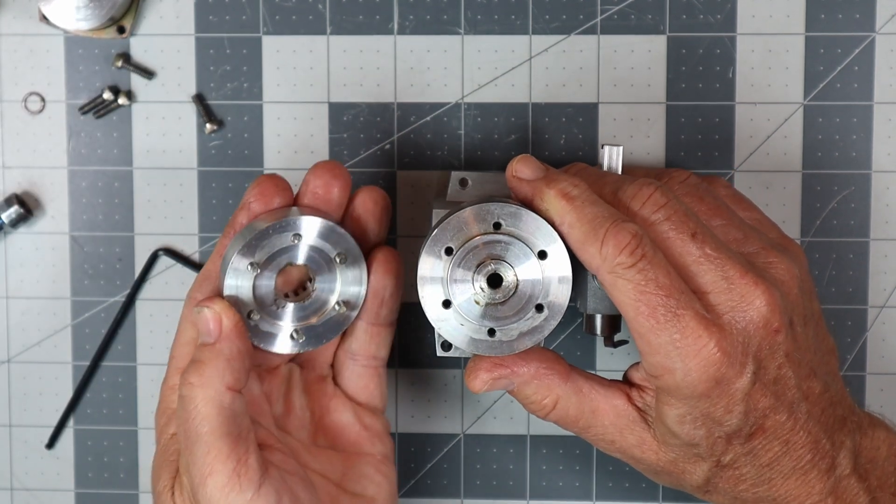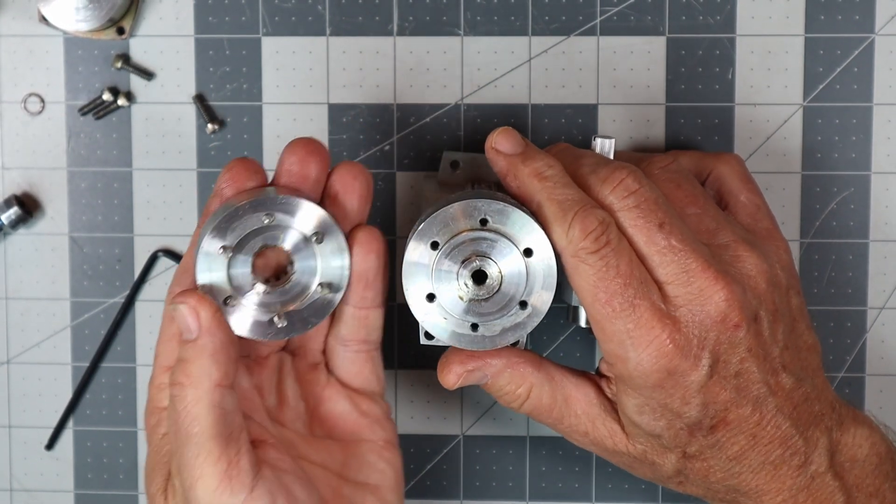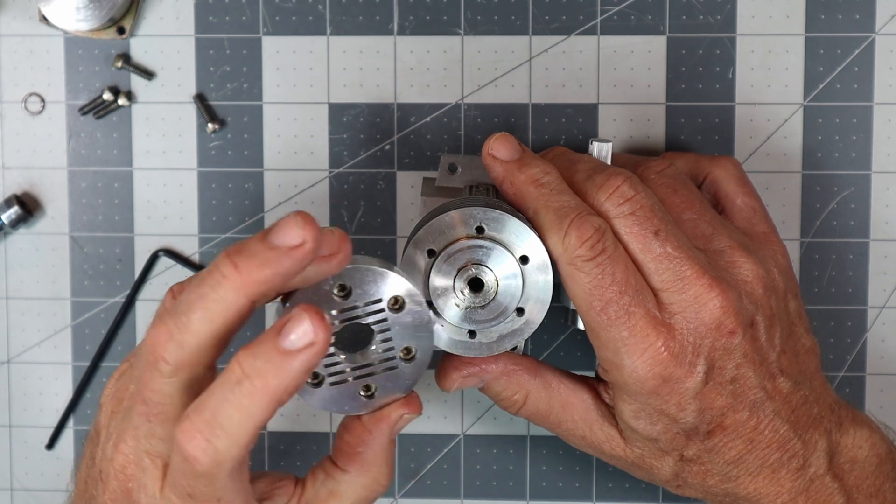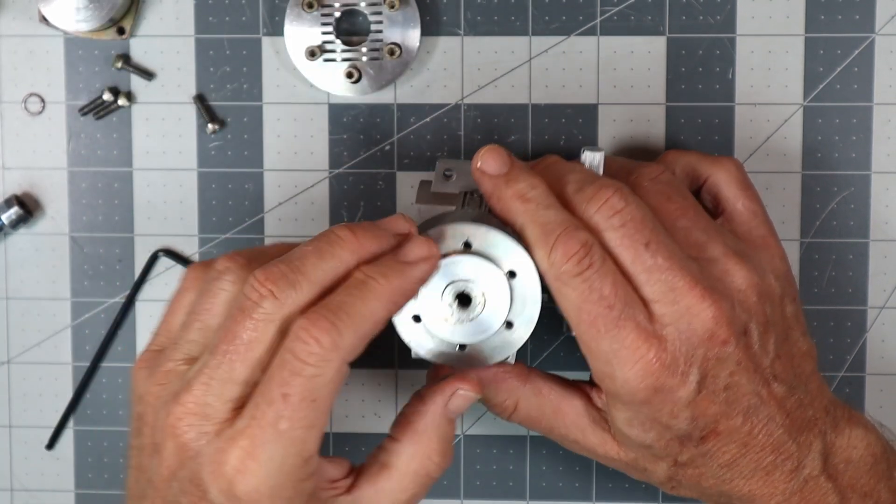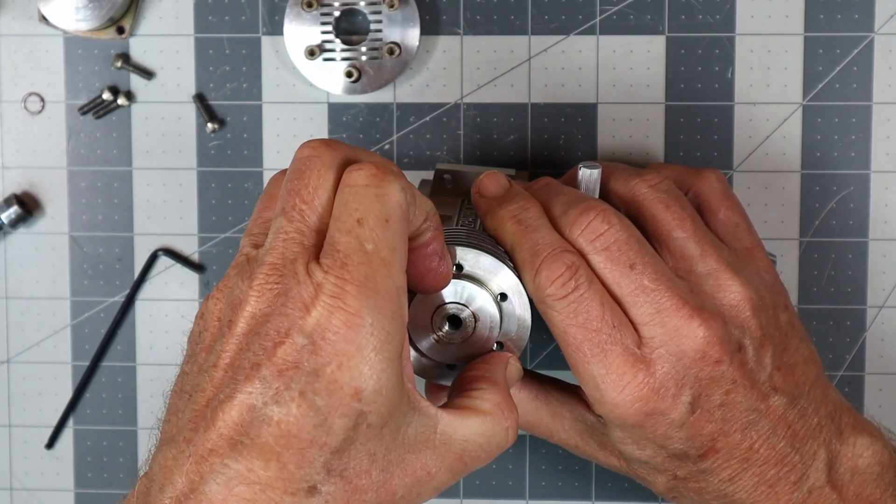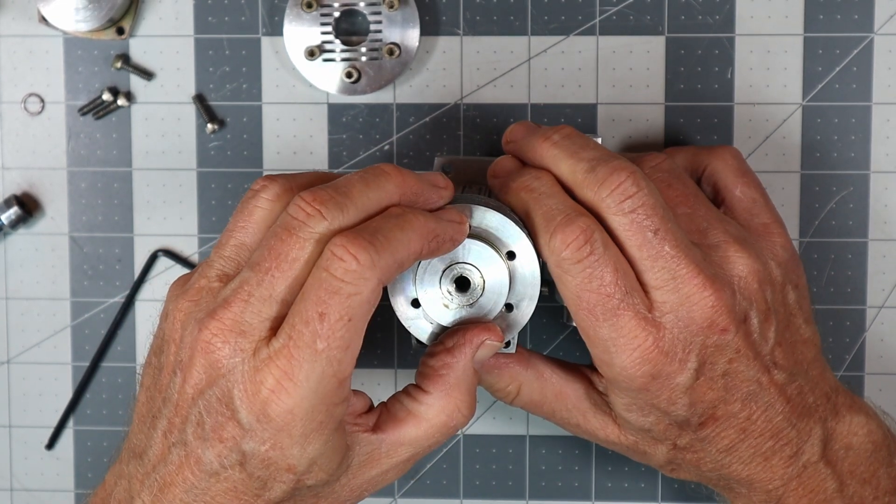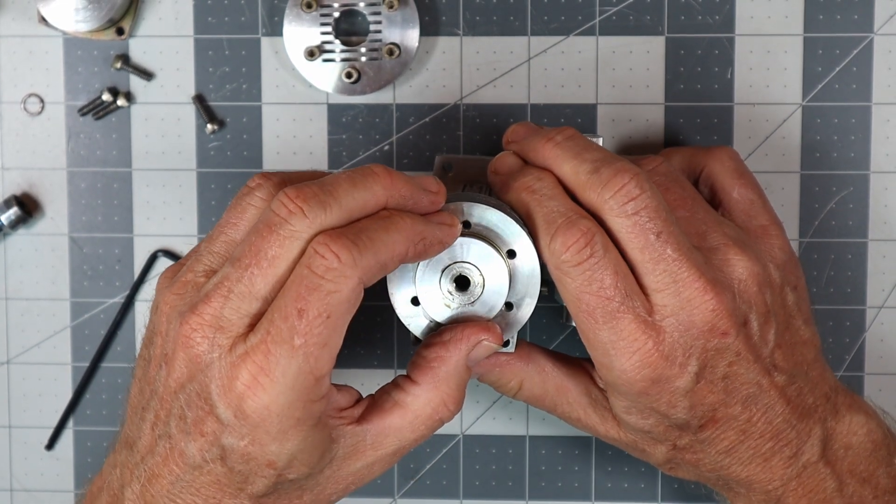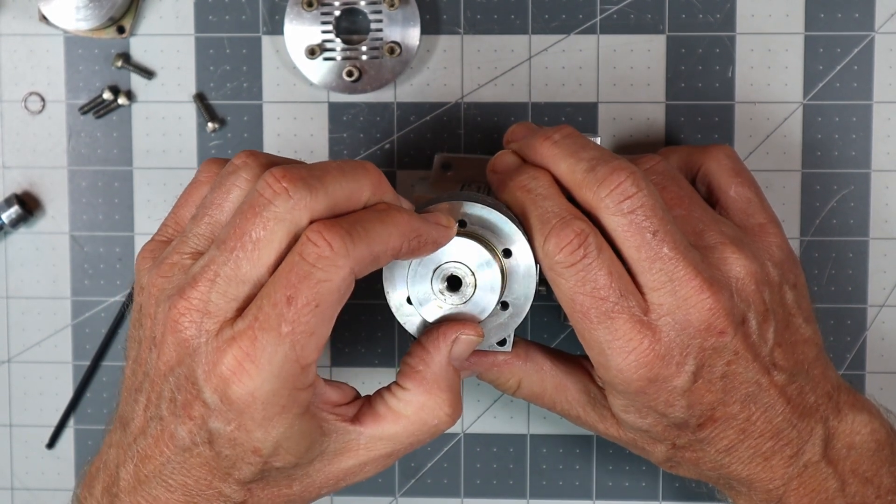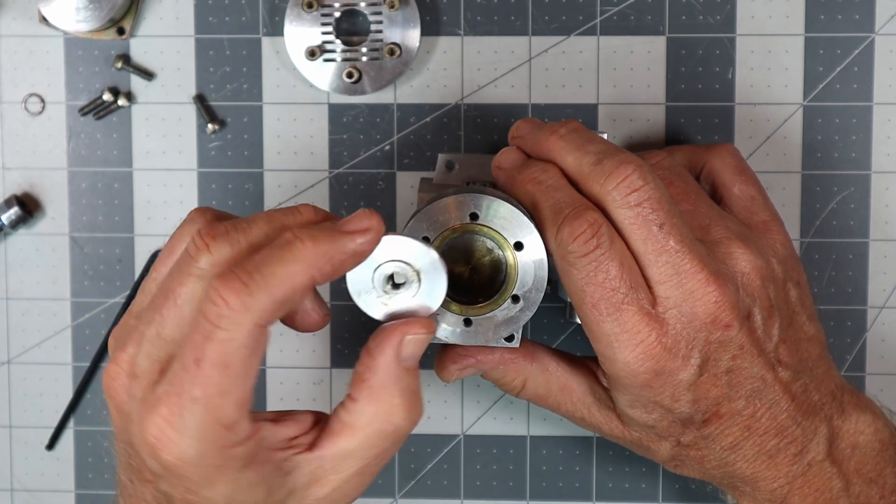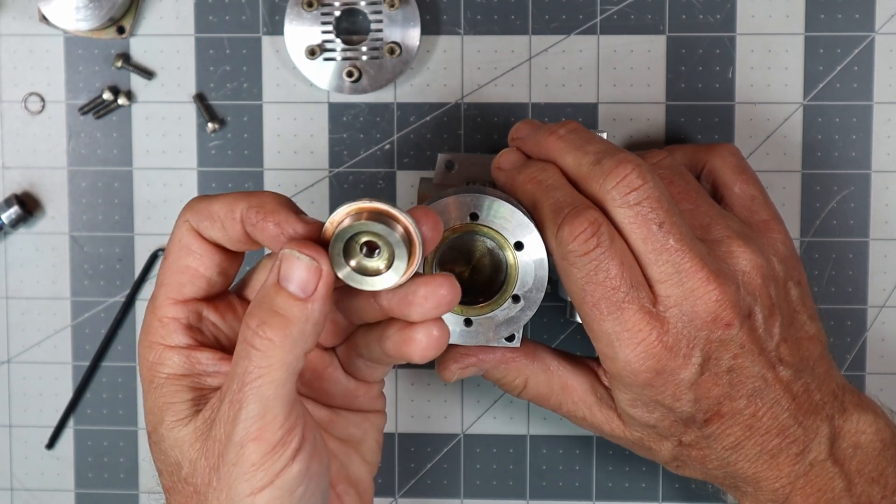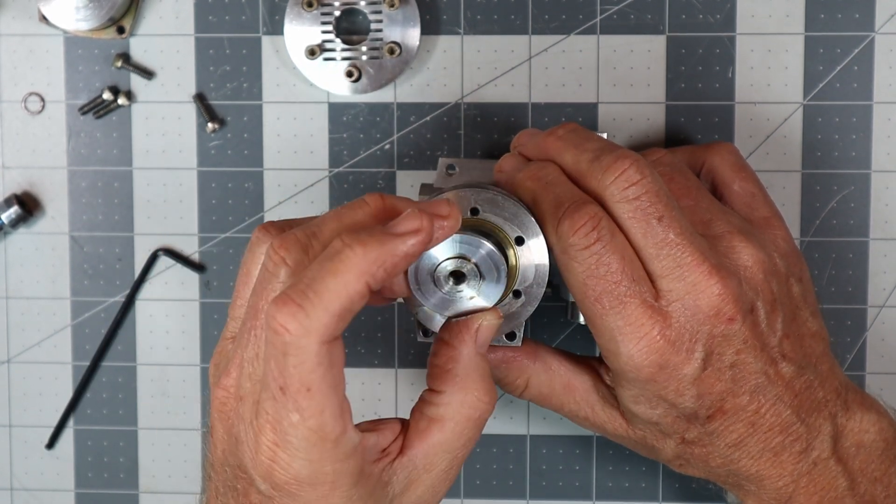So apparently this is a button style head. I'm trying to remember what other engines had this type of style head where you've actually got a little button here. Some Fox? No, I don't recall. I've seen other engines that had this style of head here where you just have a little button that comes out like that.